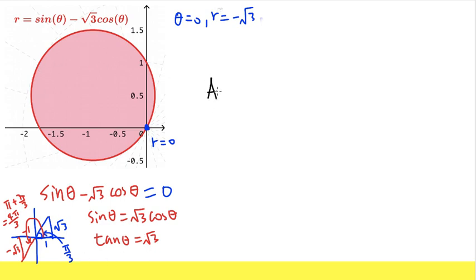All right, so remember the formula. The area is equal to the integral from theta 1 to theta 2. Theta 1 is pi over 3, while theta 2 is 4 pi over 3.